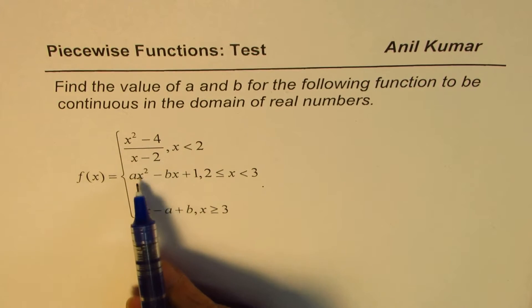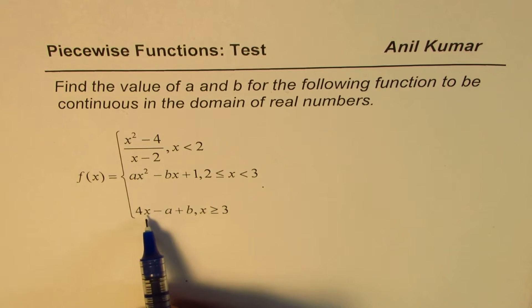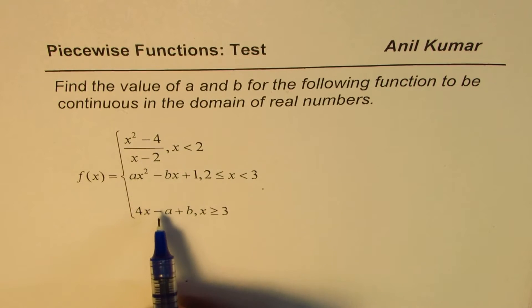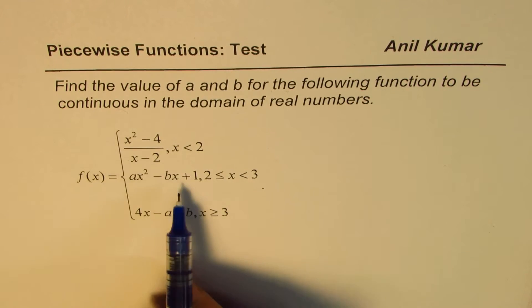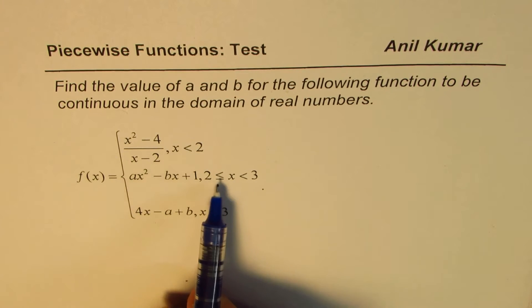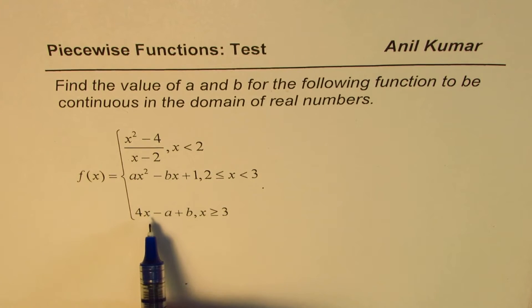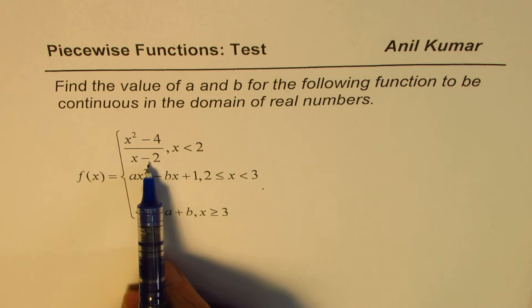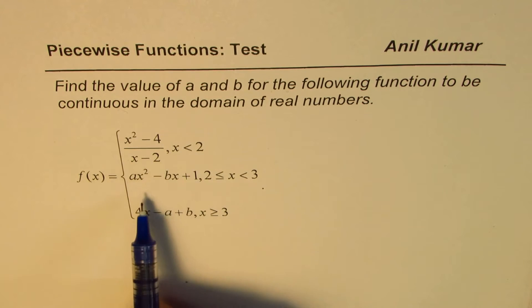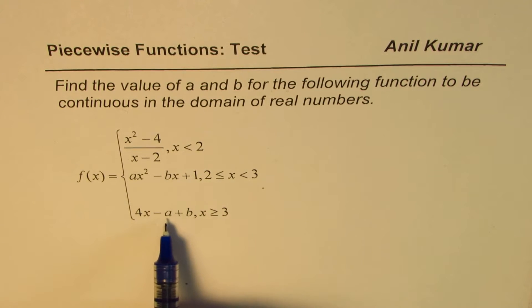So this is a function which is made up of three different pieces. If it has to be continuous, then the pieces have to get joined together at these points, x equals to 2 and x equals to 3. Individually, all these functions are otherwise continuous. So this has a discontinuity at 2. And this function is always continuous. This is a linear function, always continuous.